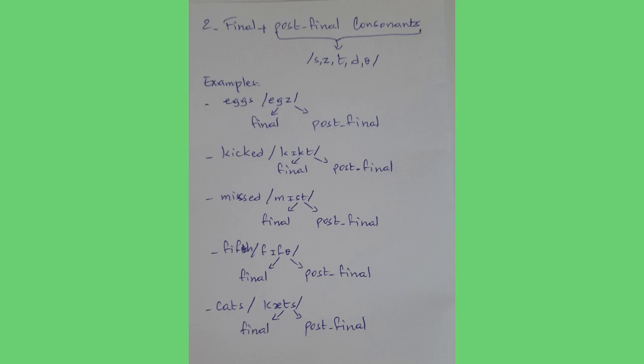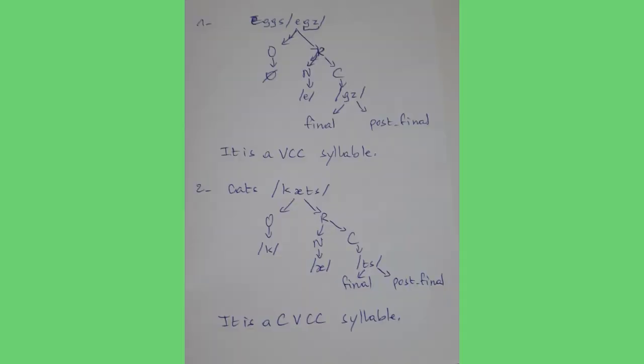Let's make a tree representation for the word 'eggs'. In 'eggs', there is zero onset, the nucleus is /ɛ/, and the two final consonants are /g/ and /z/ — so /g/ is final and /z/ is post-final. It is a VCC syllable. Another example: 'cats'. In 'cats', the onset is /k/, the nucleus is /a/, and the two final consonants are /t/ and /s/ — /t/ is final and /s/ is post-final. So it is a CVCC syllable.